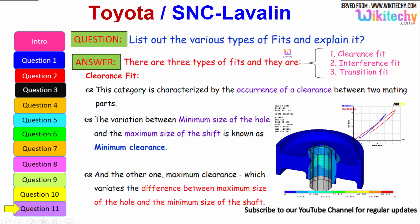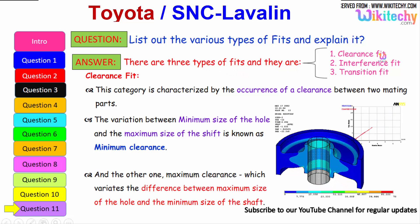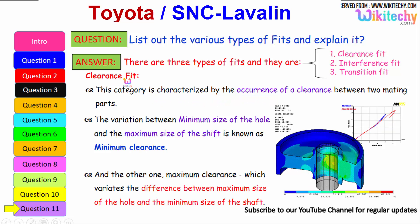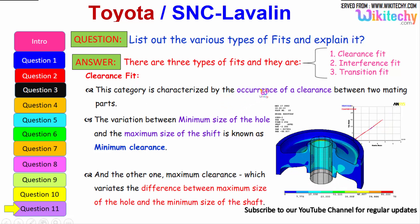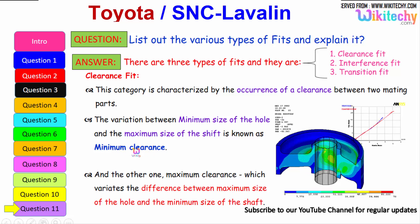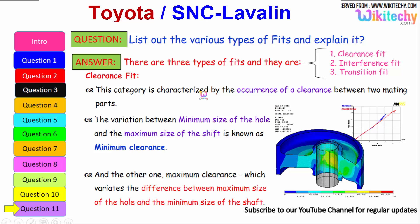Let us see the final question: list the various types of fits and explain them. There are three types of fits: clearance fit, interference fit, and transition fit. Clearance fit is characterized by the occurrence of clearance between the two mating parts. The variation between the minimum size of the hole and the maximum size of the shaft is known as minimum clearance, whereas maximum clearance is the difference between the maximum size of the hole and the minimum size of the shaft.